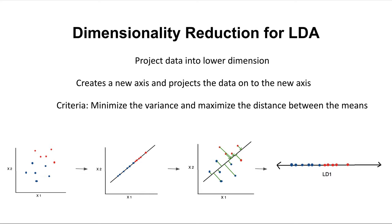The overall idea is that we took two-dimensional data, x versus y, and turned it into one-dimensional data — just a line of data. We create the axis by minimizing variance and maximizing distance between means, project onto a smaller dimension, and go from two dimensions to one dimension to get our final output. That's how dimensionality reduction for linear discriminant analysis works.